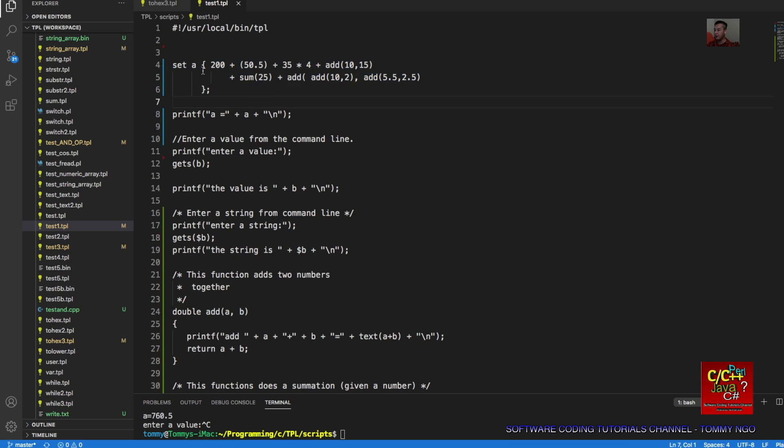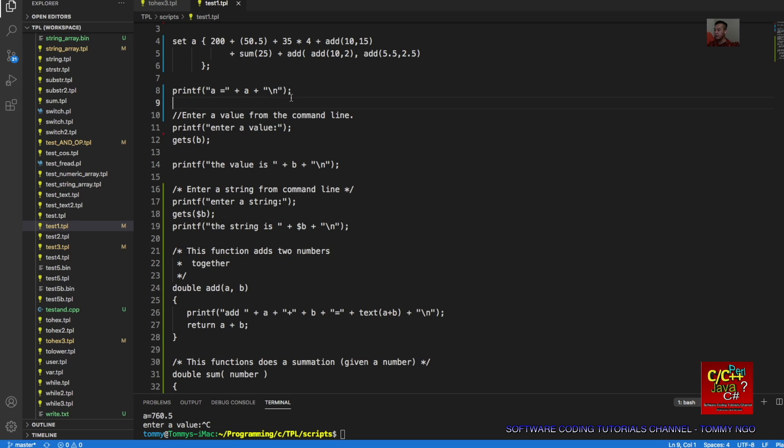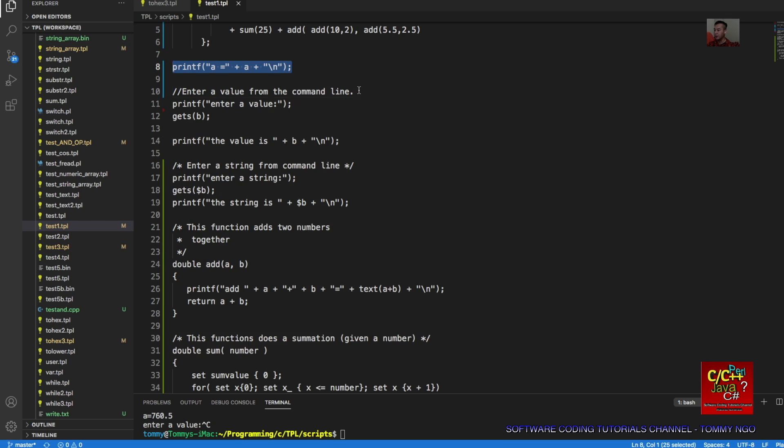Here is a typical script for the programming language I've written. In Unix or Mac OS, you can declare use local bin TPL. For example, to set a value, you would need to set A and then whatever the expression you have in A. That's of course separate from string operation. A denotes a numerical calculation. Then here's printf. You can print out the value of A afterward.